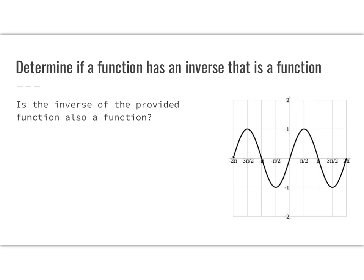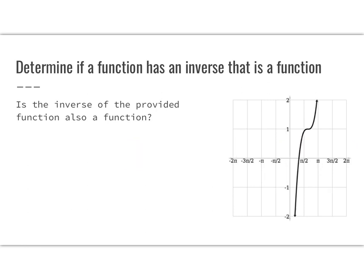Here we have sine. Is the inverse of this a function? No, because if you draw a horizontal line, it's going to hit the graph in multiple spots — it doesn't pass the horizontal line test. Or this one — does this pass the horizontal line test? Yes, it's a cubic. It looks a little interesting right there, but it is only hitting once, so it does pass the horizontal line test. To determine if a function has an inverse that is a function, look at the graph: if it passes the horizontal line test, then yes; if not, then no.